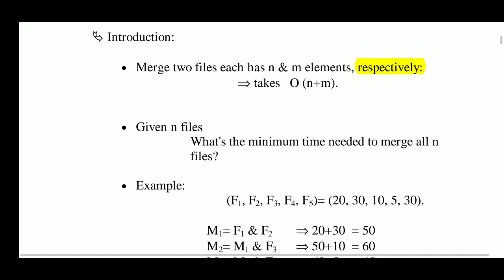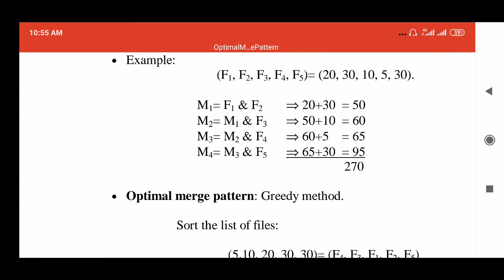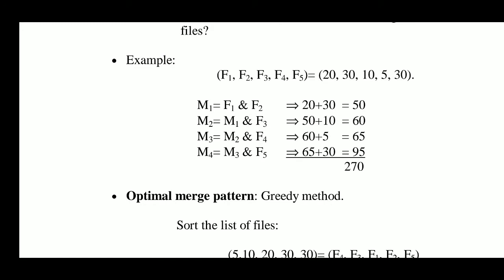Here is the example: you are given files F1, F2, F3, F4 and F5 with number of elements 20, 30, 10, 5 and 30 respectively. F2 and F5 have the maximum number of elements and F4 has the minimum number of elements which is 5. If you merge them in the sequence given or by any random merging, you cannot get the optimal solution.